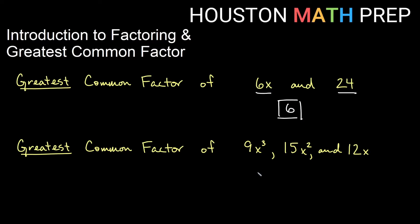If we look at the next one — the greatest common factor of three terms: 9x cubed, 15x squared, and 12x — let's first look at the coefficients. We have 9, 15, and 12. What is the biggest thing that will go evenly into 9, 15, and 12? The answer is 3. So 3 is going to be part of our greatest common factor. Then I look at the variable part: x cubed, x squared, and x. They all have at least a single x in them — this one has two copies, this one has three copies, but they all have at least an x. So the greatest common factor of these three is 3x.